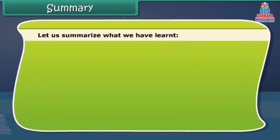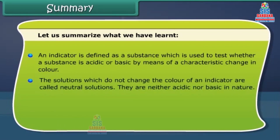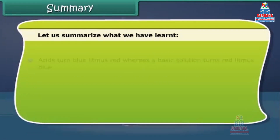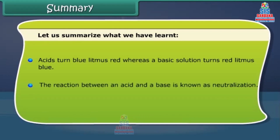In summary: An indicator is a substance used to test whether a substance is acidic or basic by means of a characteristic color change. Solutions that do not change the color of an indicator are called neutral solutions — neither acidic nor basic. Indicators found in nature are called natural indicators; litmus is a widely used example. Acids turn blue litmus red, while a basic solution turns red litmus blue. The reaction between an acid and a base is known as neutralization.